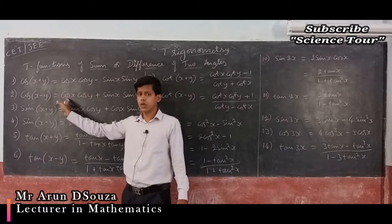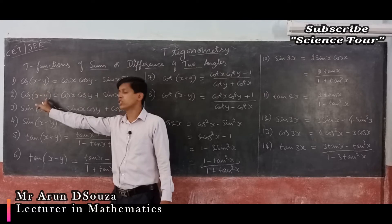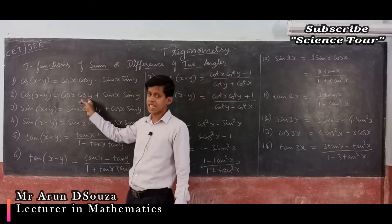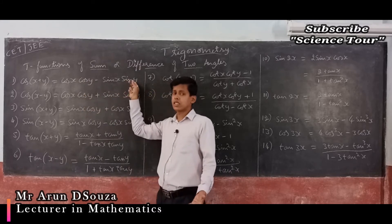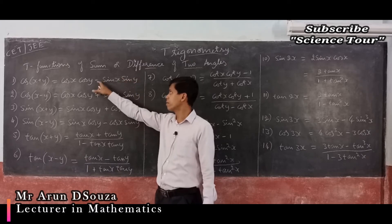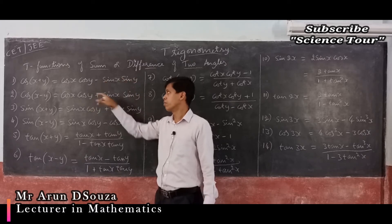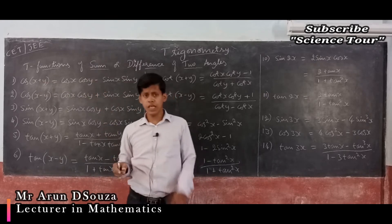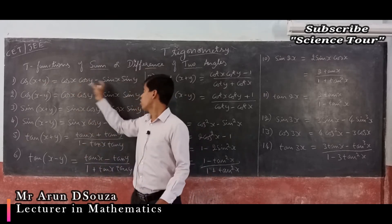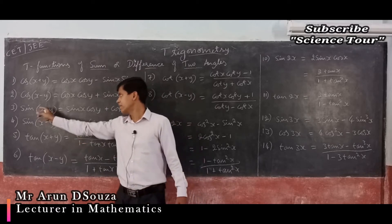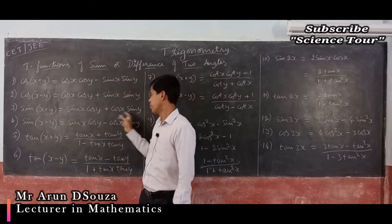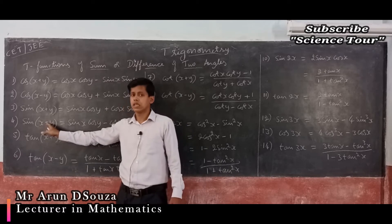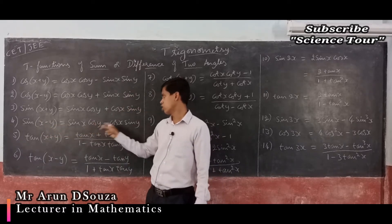For sin(x + y) = sin x cos y + cos x sin y, and sin(x − y) = sin x cos y − cos x sin y. You can remember it as: for cos, it is 'cos cos ∓ sin sin' (opposite sign), and for sin, it is 'sin cos ± cos sin' (same sign as the angle).